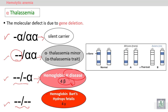In hydrops fetalis, four gamma chains form instead of the normal alpha chains. During intrauterine life, if we have only gamma and no alpha, an abnormal hemoglobin consisting of four gamma chains is produced.